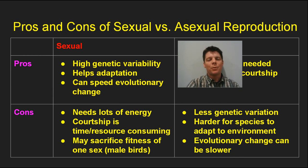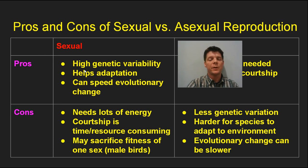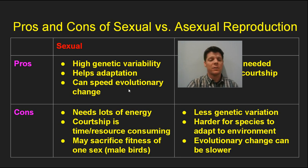Here we're looking at pros and cons — advantages and disadvantages — of sexual reproduction versus asexual reproduction. Sexual reproduction leads to high genetic variability because of the meiosis concepts just discussed, producing genetically unique gametes. This helps with adaptation: if there's more genetic variation, a species can adapt to its environment by evolving more rapidly. However, there are some negatives — sexual reproduction requires a lot of energy. Courtship, where males try to attract female mates, is very time-consuming and resource-consuming.